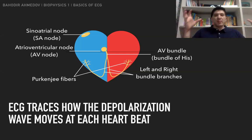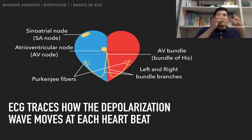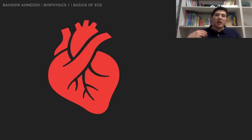At some point, all the cells of the heart become depolarized, and then suddenly they become repolarized. If you don't remember what depolarization means, let's look at this in more detail.